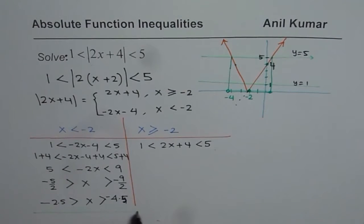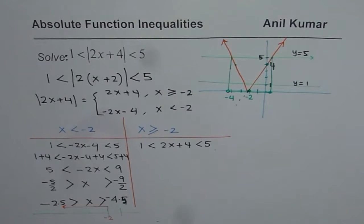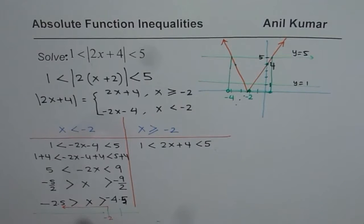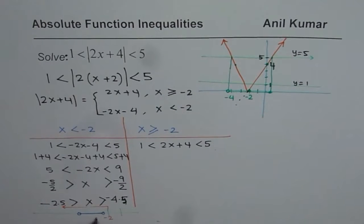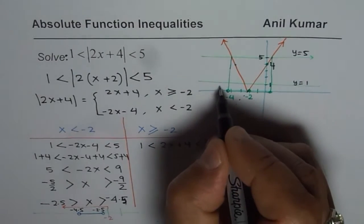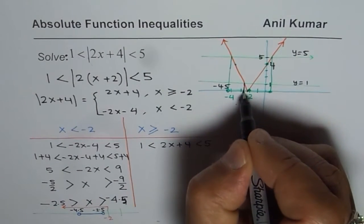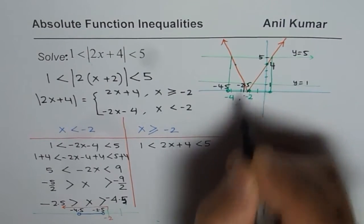On a number line, we are working for x on the left side of minus 2. We do have a solution from minus 4.5 to minus 2.5. So this is minus 2.5 and this is minus 4.5 — the solution is between these two values.